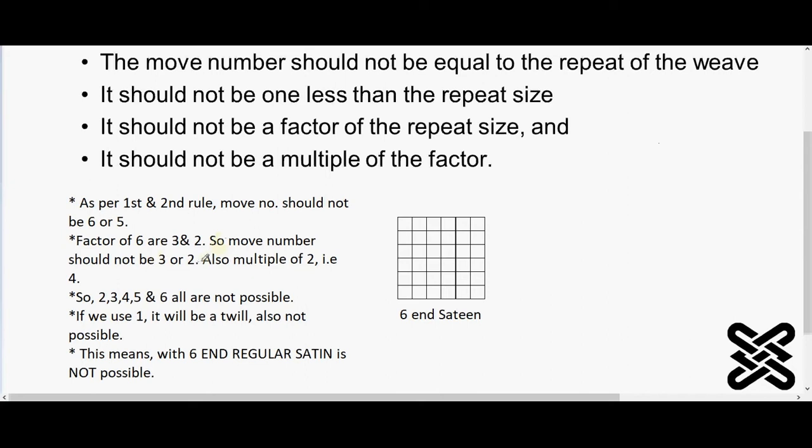Also, multiple of two, that is four. So move number should not be four. So we can see 2, 3, 4, 5, 6 are not possible as a move number. Now if we use one as a move number...